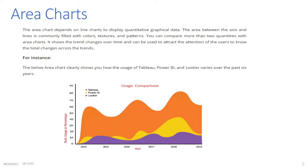Area Charts: The area chart depends on line charts to display quantitative graphical data. The area between the axis and the lines is commonly filled with colors, textures, and patterns. You can compare more than two quantities with area charts. It shows trend changes over time and can be used to attract the attention of users to know the total changes across the trends. For example, the area chart clearly shows how the usage of Blue, Power BI, and Looker varies over the past six years.